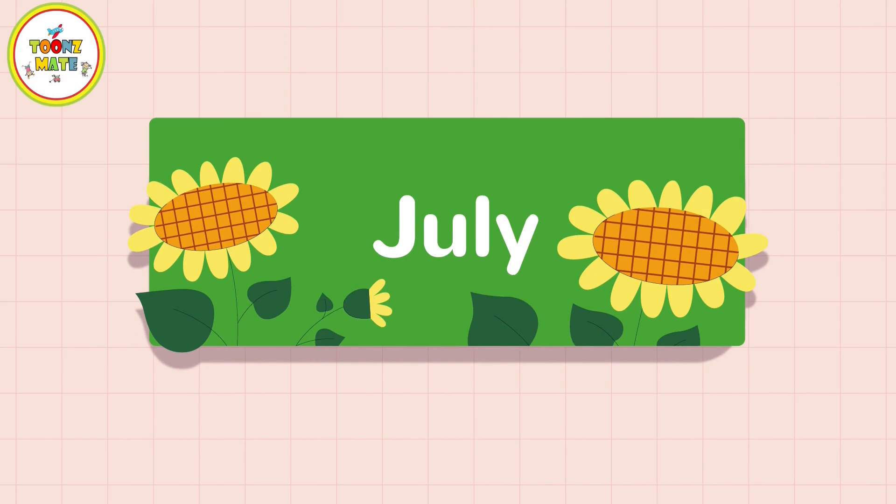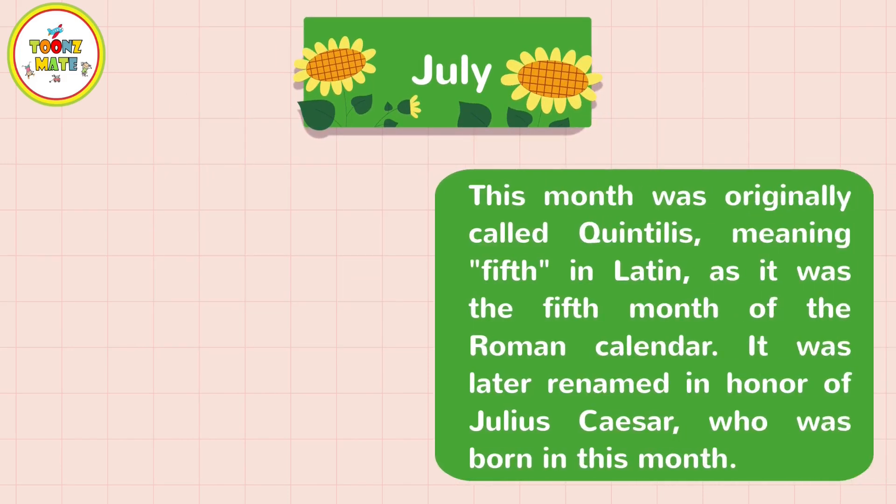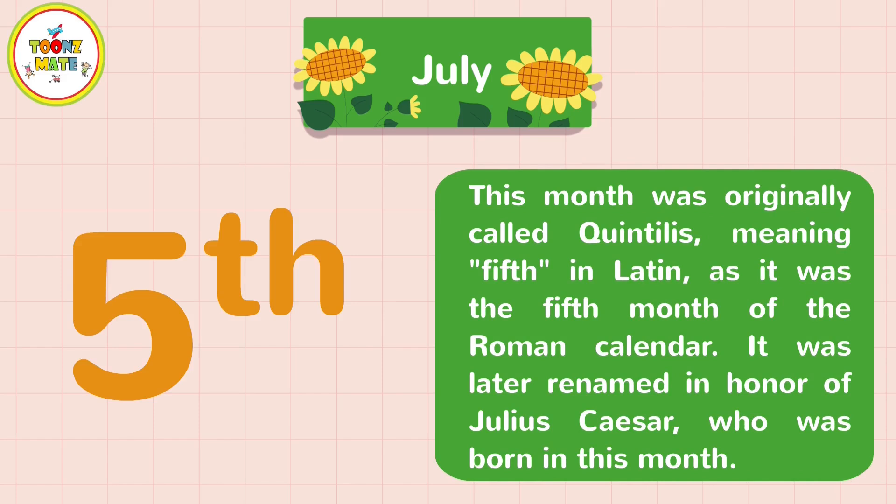July. This month was originally called Quintilus, meaning "fifth" in Latin, as it was the fifth month of the Roman calendar.